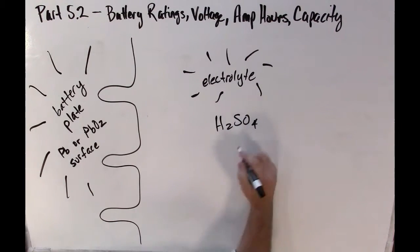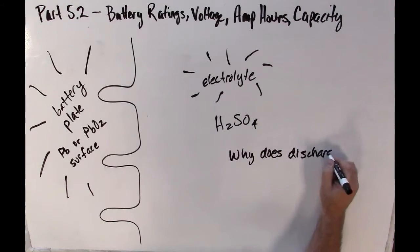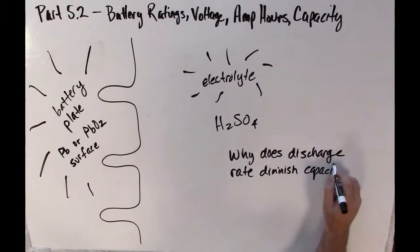On the right is the liquid electrolyte. On the left is the solid battery plate. The electrolyte could be water if it's mostly discharged or a mixture of water and sulfuric acid.